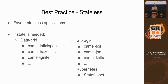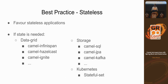Another good pattern is to be stateless — favor statelessness. When you do need state, Camel integrates with data grid solutions like JBoss Infinispan, Hazelcast, and Apache Ignite, or you can use traditional SQL databases, Kafka, Redis, and so on. Kubernetes itself also has a concept for stateful workloads called a stateful set.